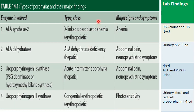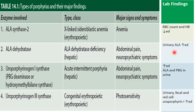Looking at specific types: deficiency of ALA synthase-II leads to X-linked sideroblastic anemia, an erythropoietic type. Major signs and symptoms are anemia type, with reduced Hb and RBC counts in lab findings. Deficiency of ALA dehydratase leads to ALA dehydratase deficiency porphyria, a hepatic type. Major signs and symptoms are abdominal pain and neuropsychiatric symptoms, with increased urinary ALA in lab findings.